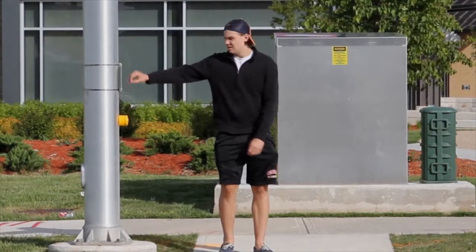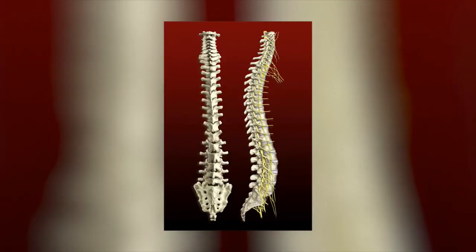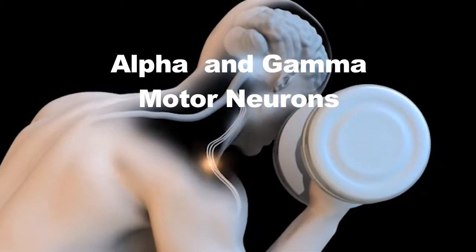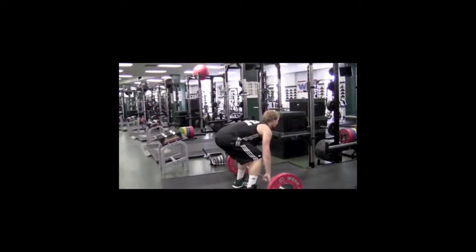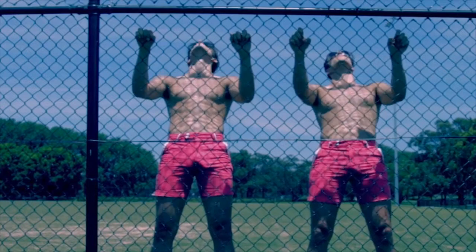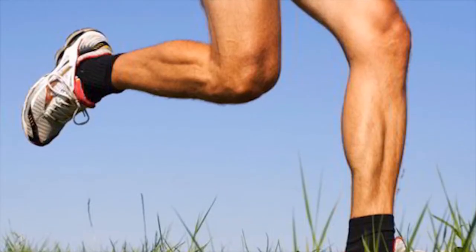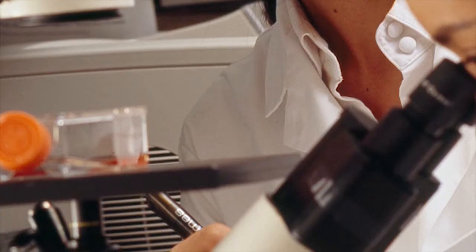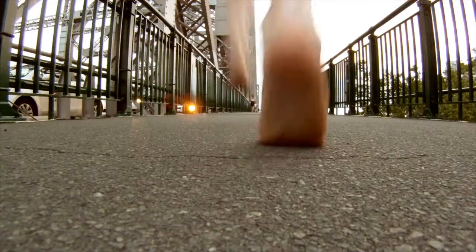There are two types of motor neurons in the spine: alpha and gamma motor neurons. Alpha motor neurons stimulate muscle fibers responsible for force production. Gamma motor neurons stimulate fibers within the muscle spindle, which measures the length or stretch of a muscle. The Golgi tendon is also a stretch receptor found in the tendons that connect the muscles to the skeleton; it gives information about the force of muscle contraction to motor centers.